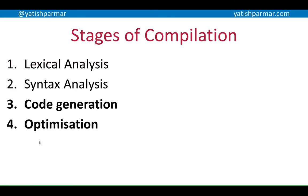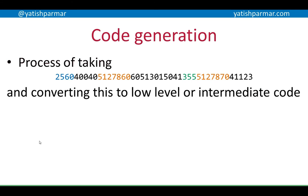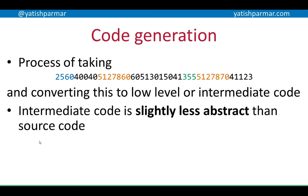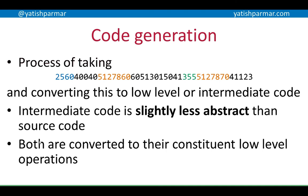Once you perform lexical and syntax analysis, we need to talk about how actual code is generated and then optimized. Code generation is the process of taking that intermediate code and converting it to low-level instructions. Remember, intermediate code is slightly less abstract than source code but still not executed directly by a machine. During code generation, we take that intermediate code and turn it into low-level operations that can be executed by a CPU.